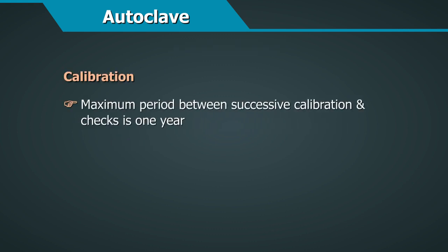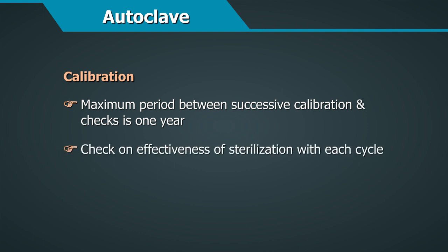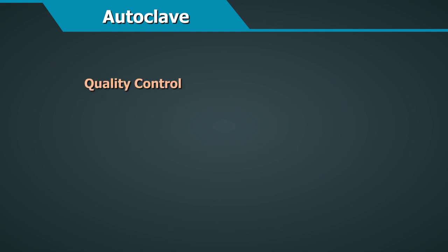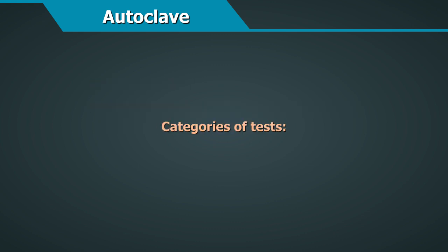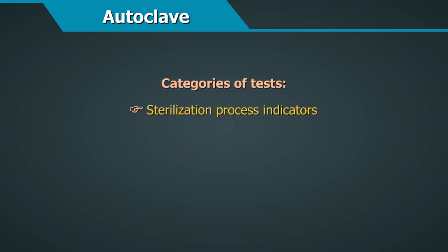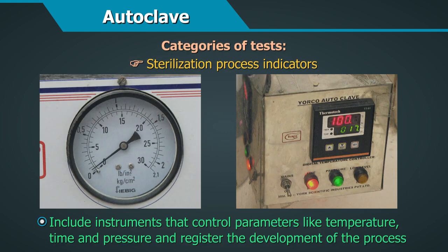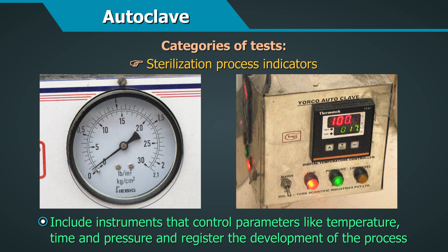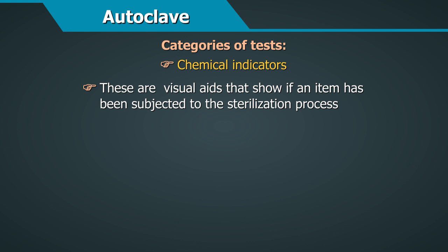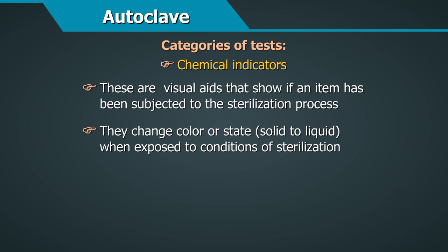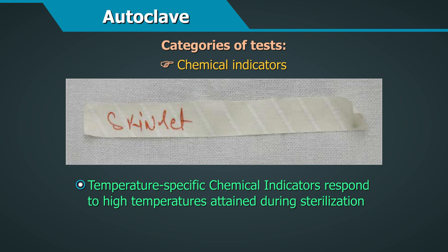The maximum period between successive calibrations and checks should be one year, with effectiveness of sterilization checked with each cycle. For quality control, different categories of tests are used. Sterilization process indicators supervise the functioning of autoclaves by controlling parameters like temperature, time, and pressure. Chemical indicators are visual aids that show if an item has been subjected to the sterilization process — they change colour or state, such as solid to liquid, when exposed to sterilization conditions. Temperature-specific chemical indicators respond to high temperatures attained during sterilization.